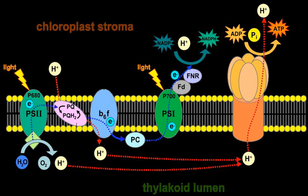The thylakoid membrane contains some integral membrane protein complexes that catalyze the light reactions. There are four major protein complexes in the thylakoid membrane: Photosystem II (PSII), Cytochrome B6F complex, Photosystem I (PSI), and ATP synthase.